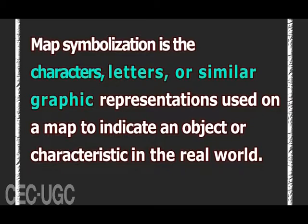Map symbolization refers to the characters, letters, or similar graphic representations used on a map to indicate an object or characteristic in the real world. Some cognitive issues exist — there are many cognitive issues involved in the cartographic process and symbolization. Some people may perceive certain objects differently from others, so cartographers try not to use symbols that could be easily confused. For example, red and blue are universally known to depict hot and cold.